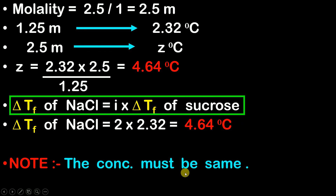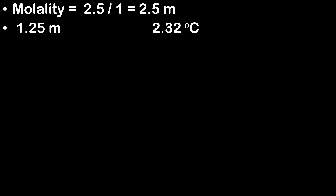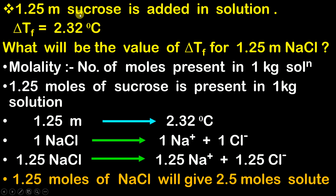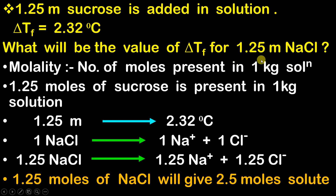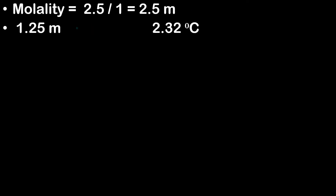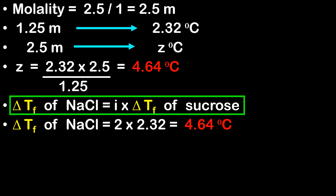Here you must note one thing: the concentration must be the same. When you are multiplying with the value of i, the concentration of sucrose must be the same — 1.25 molal — and the concentration of NaCl must also be 1.25 molal. Only then can you multiply directly with the value of i. What if the concentration is not the same? If the question asks for 5 molal NaCl, then you will use the formula for i to find the value for 1.25 molal first, and then find the value for 5 molal.